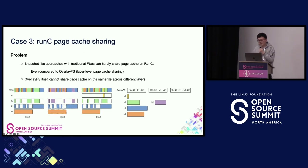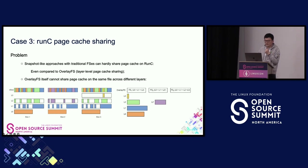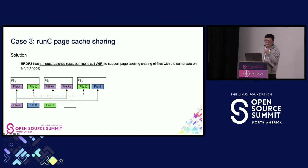The last case is RONC page cache sharing. The snapshot-like approach has the same problem, and overlayFS itself cannot share page cache on the same file access across different layers. Our solution is that EROFS has an in-house patch to support page cache sharing — currently it has an in-house patch because it is not quite clean. On the same node, it will only have the same page cache for each unique file.